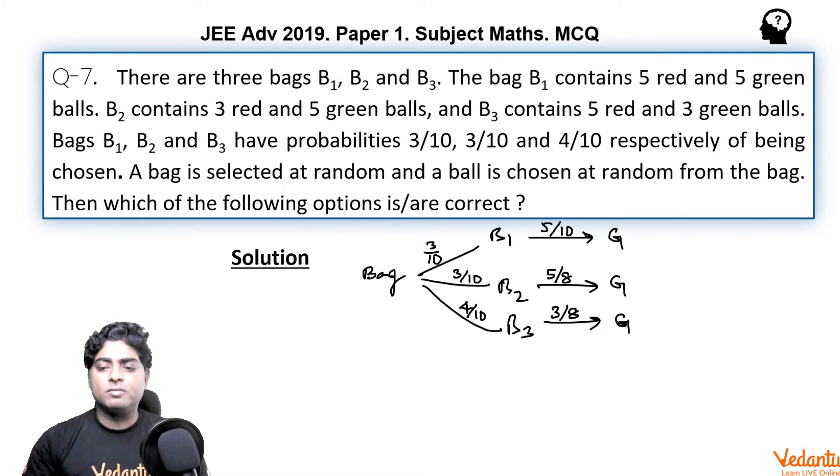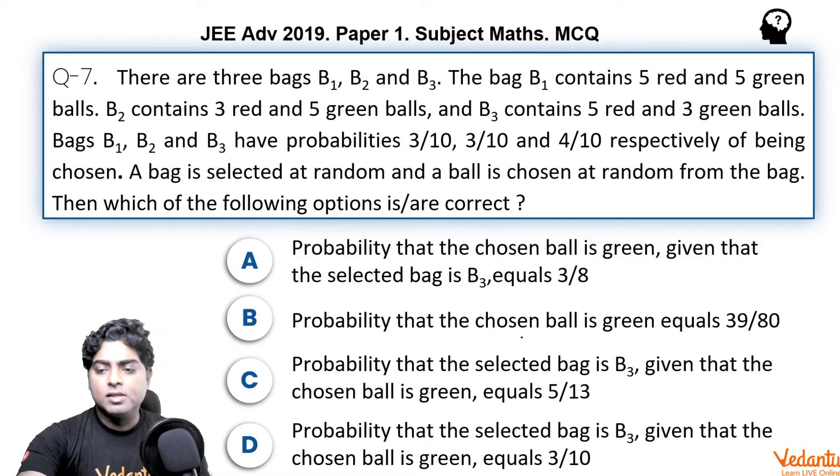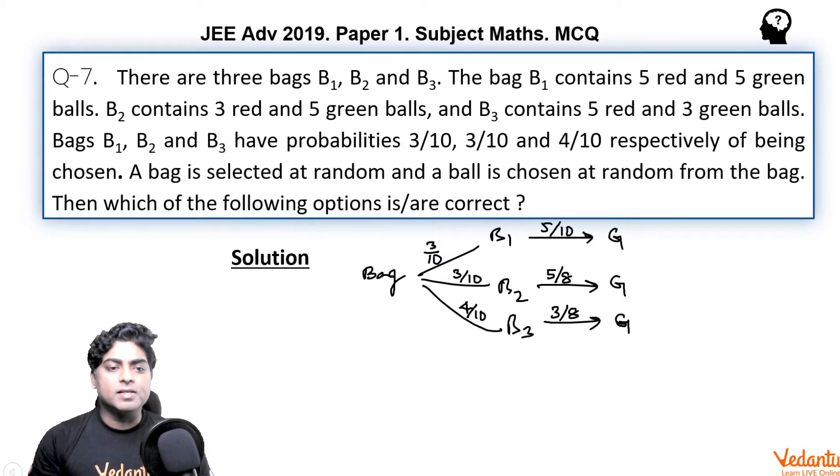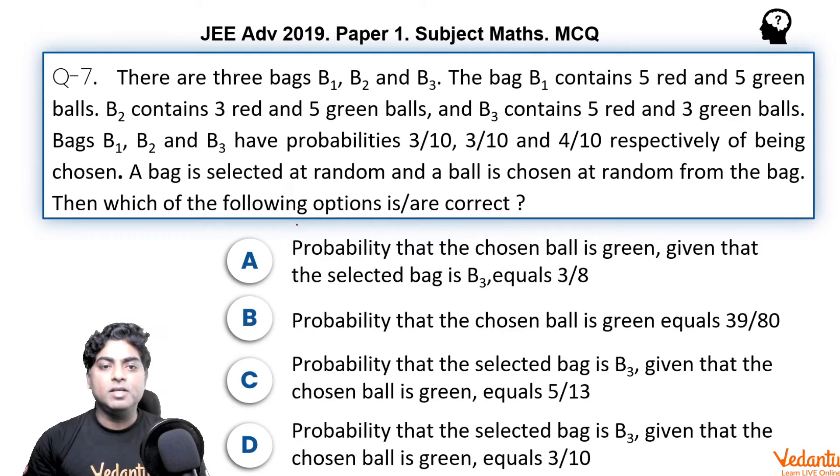We can find everything, every part of this question using this tree diagram. Coming to option A: probability that the chosen ball is green given that the selected bag is B3 equals 3 by 8. Bag 3 was chosen is given to us. It is simply asking the probability of taking green ball if it is given that bag 3 is chosen. It is representing the number of green balls in bag 3 upon the number of balls in bag 3. So it is 3 by 8. Option A must be true.